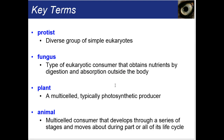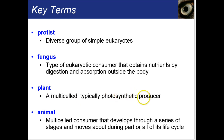Fungi obtain their nutrients by digestion and absorption outside the body. Yeast are an example of a single-celled fungus, but most others are multi-celled. Because they're doing their digestion outside of their body and then absorbing what they digest, that's why they tend to look the way they do. Plants, because they contain chlorophyll, are able to photosynthesize their own sugar. Animals are multi-celled consumers and develop through a series of different stages in our life.